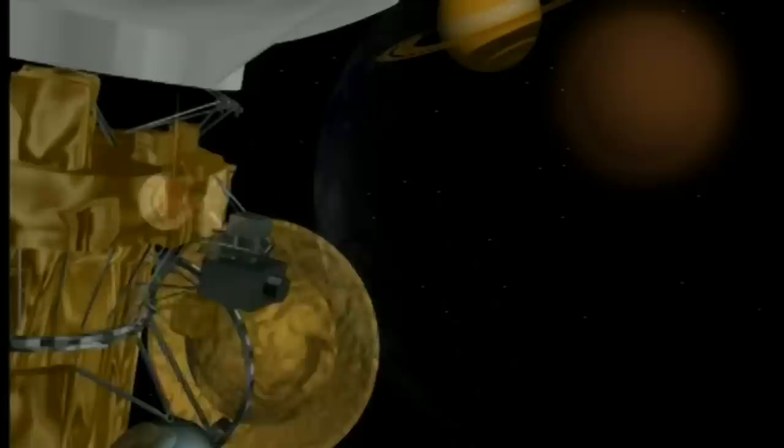Voici Cassini. À son arrivée sur Titan en 2004, Cassini déploiera un module d'atterrissage justement nommé Wiggins. La descente durera environ deux heures et demie.